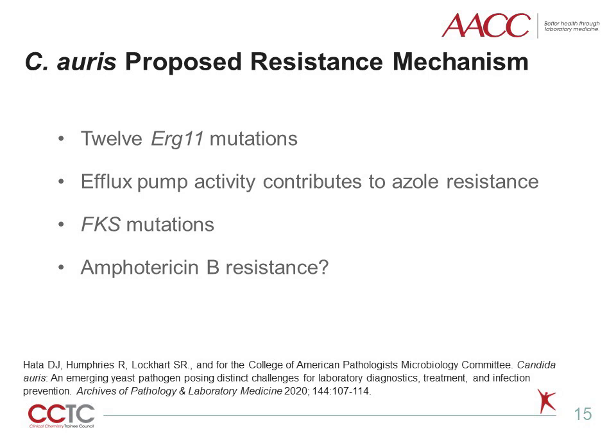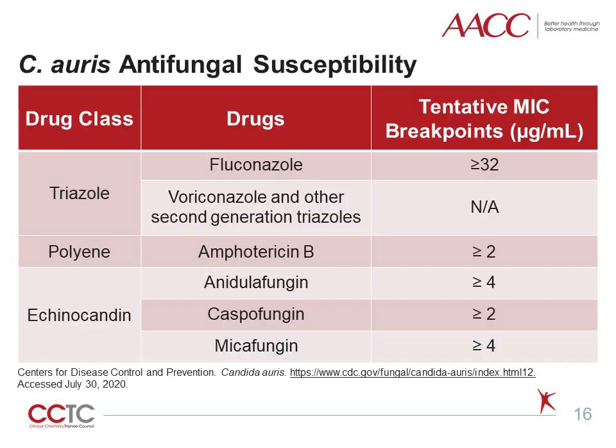FKS mutations have also been identified and most likely contribute to echinocandin resistance. As for amphotericin B resistance, though unconfirmed at this time, it is suspected to be due to a reduction in ergosterol, the target for amphotericin B in the cellular membrane. So far, there are no definitive antifungal minimum inhibitory concentration, or MIC, breakpoints for C. auris to evaluate for resistance. The CDC has provided some tentative breakpoints based on epidemiological cutoff values from other Candida species and model distribution of MICs of approximately 100 isolates from diverse geographical locations. These breakpoints are informational only and have not been approved by any regulatory agency or standardization committee.